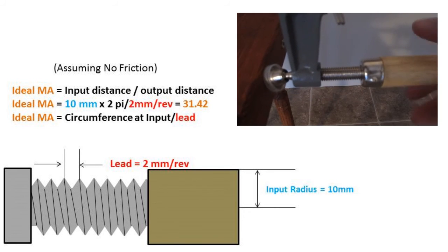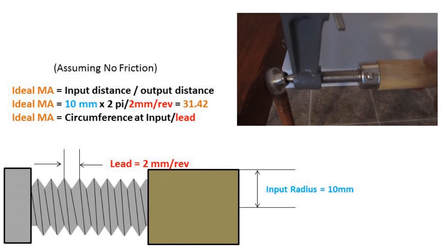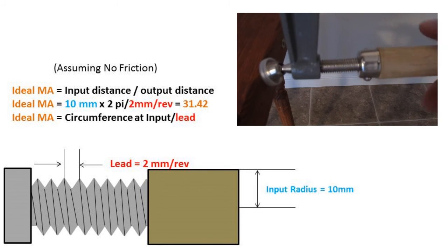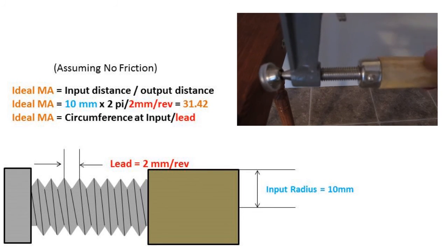So after we plug our numbers into our calculator, we get a mechanical advantage of 31.42. This means that whatever force we put in the input knob is multiplied by 31.42. This increase in force comes at the cost of having less displacement.